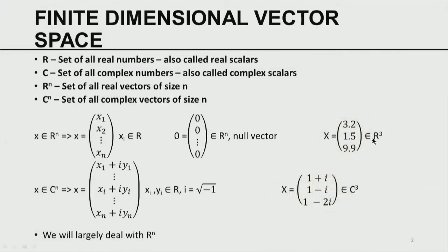X belonging to Rn implies X is a vector with n components, written column-wise, where each component Xi is a real number. The zero vector consists of all zeros and is called a null vector. When n is 3, here is an example: the vector (3.2, 1.5, 9.9), where 3.2 is X1, 1.5 is X2, and 9.9 is X3.